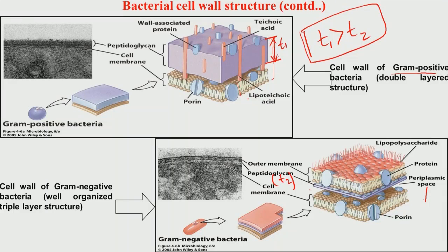Gram-negative bacteria like E. coli represent a very characteristic three-layer structure, with the peptidoglycan layer sandwiched between two outer layers. There are also several transmembrane proteins visible in the gram-negative bacteria. As a result, the bacterial wall in gram-negative bacteria is structured quite differently from that of gram-positive bacteria.